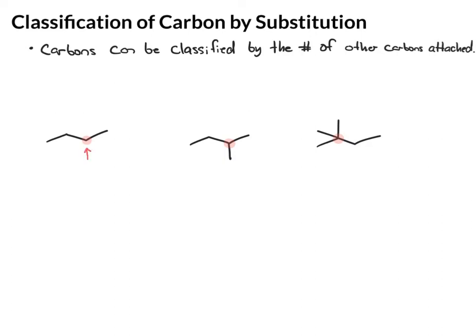And then just count how many carbons are attached to it. So in this first one, my carbon of interest has one carbon, two carbons attached. Two carbons, we call that a secondary carbon. We use this two-degree symbol to represent secondary. This is called two-prime.